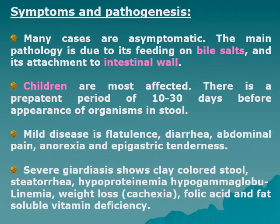There is a pre-patent period of 10 to 30 days depending on the infecting dose and the patient's immunity, before cysts appear in the stool. Mild disease includes flatulence, mild diarrhea, abdominal pain, anorexia, and epigastric tenderness.